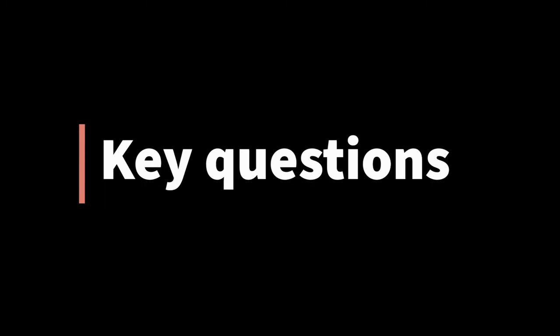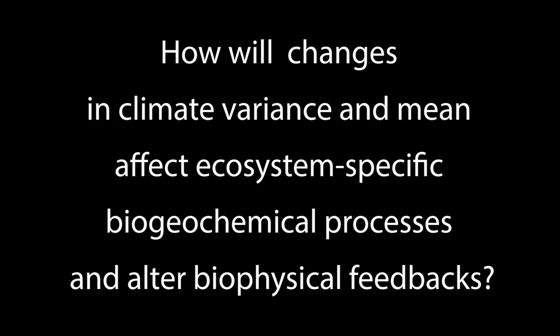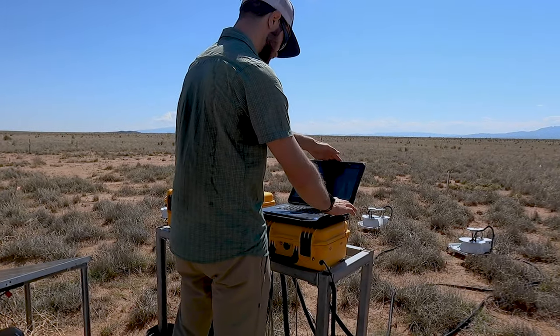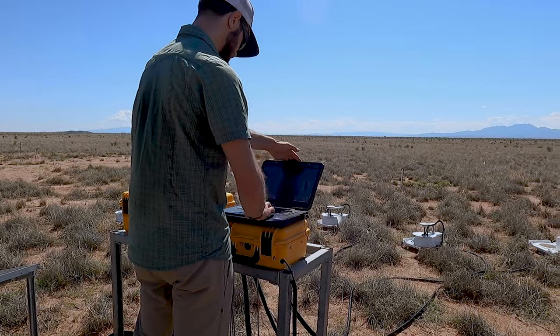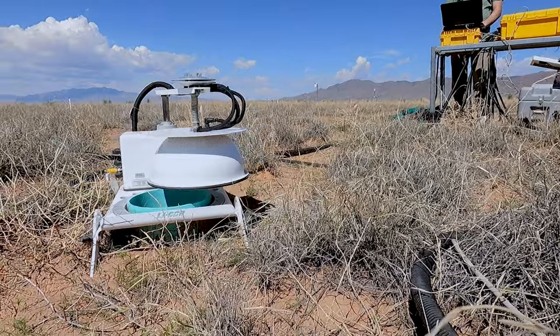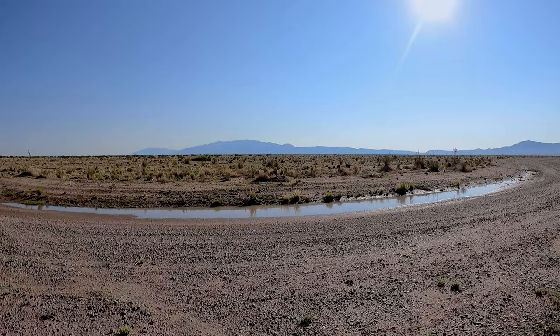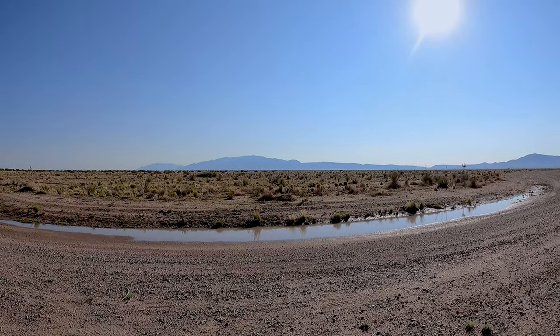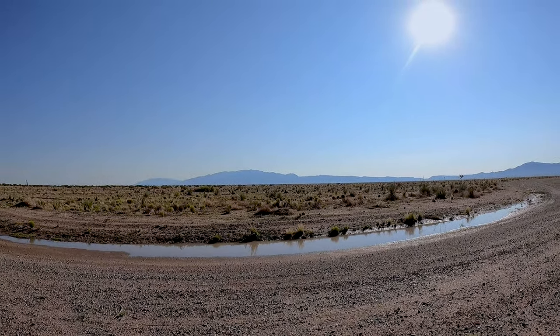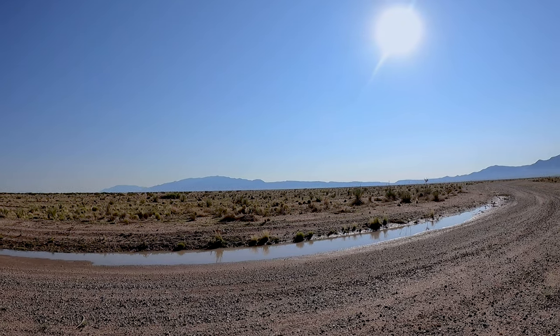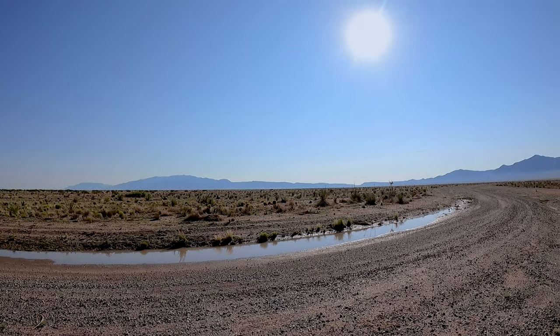The key questions we want to answer are: how will changes in climate variance and mean affect ecosystem-specific biogeochemical processes and alter biophysical feedbacks? To get there, we need to know how much carbon is sequestered by different ecosystems, and when most of the sequestration occurs, and also how the amount, timing, and variability of available water influences carbon sequestration and water dynamics in each of these ecosystems.